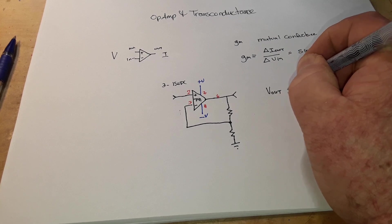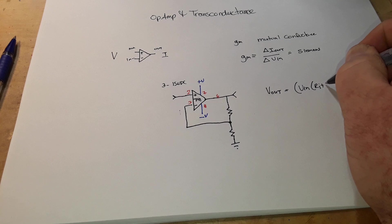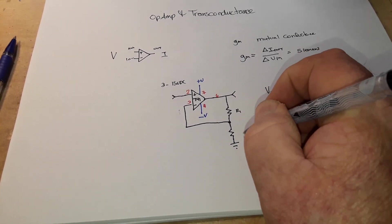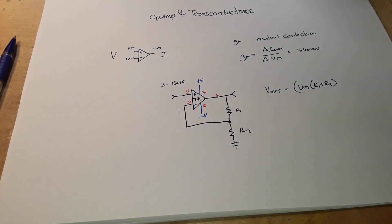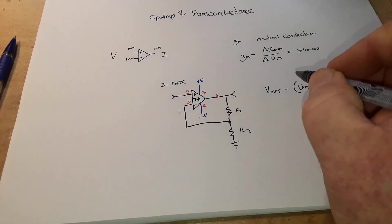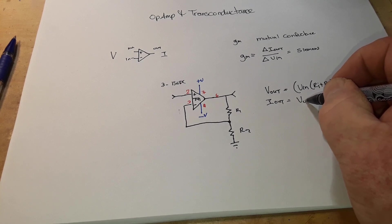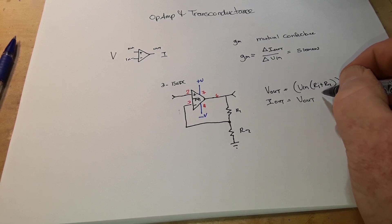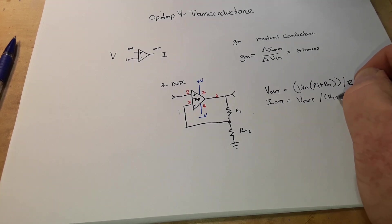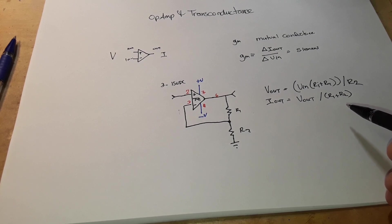Our V out in this case is going to be equal to V in times R1 plus R2, this is R1 and R2, divided by R2. Our I out is going to be equal to V out divided by R1 plus R2. You see how that is quite similar.